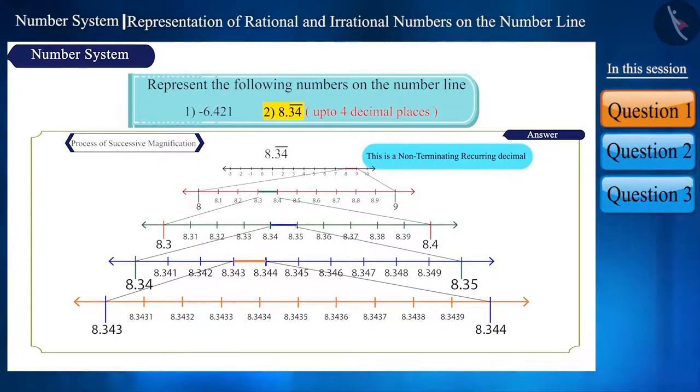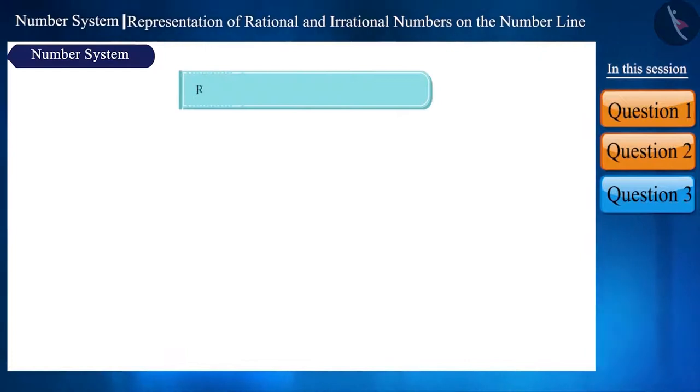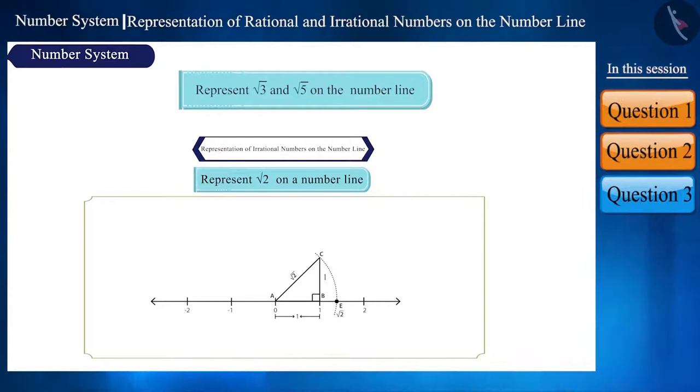This number will lie between 8.3434 and 8.3435 on the number line. Now let's take another question. Can you represent root 3 and root 5 on the number line? In our previous video, we learned how to represent root 2 on a number line. Following the same method, let's see how to represent root 3 and root 5 on the number line.